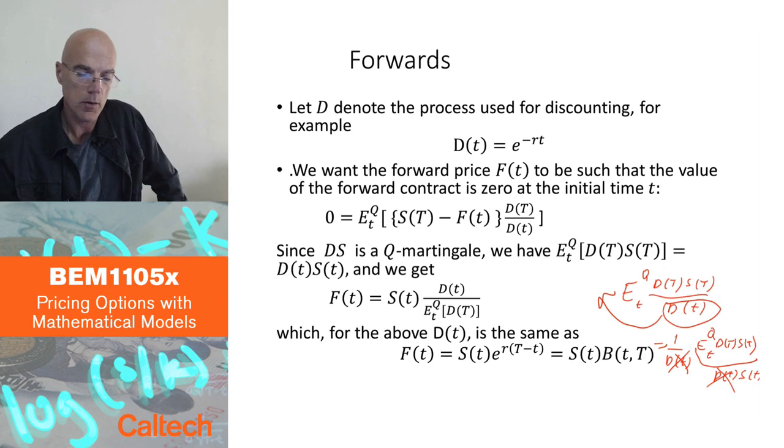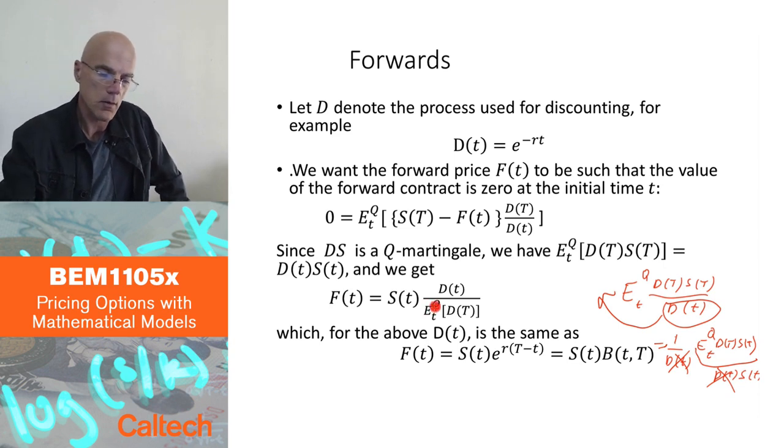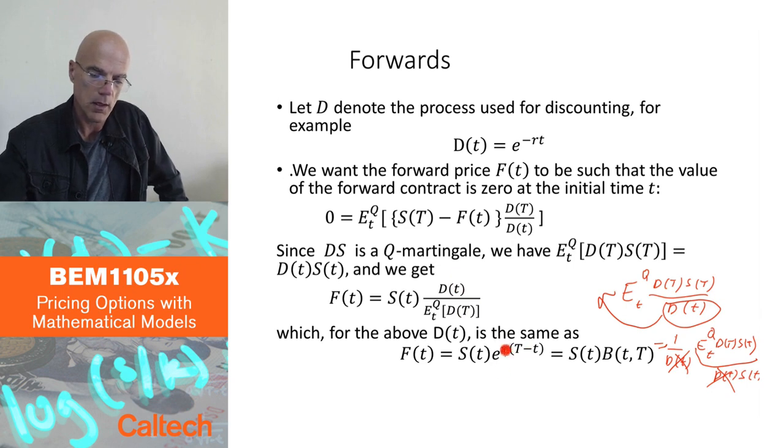We can check that this gives the same price as before. In the special case, let's say with continuously compounded deterministic interest rate, in which case I don't need this expectation. So this is e to the minus rt, this is e to the minus rT. I can write this ratio as e to the r capital T minus small t. Which is the same formula I had before for the forward price.